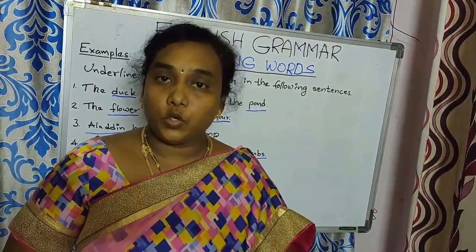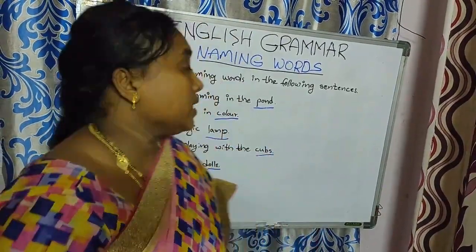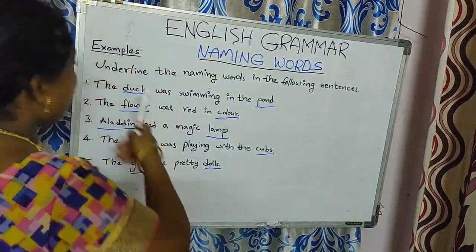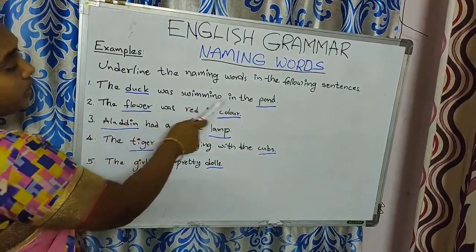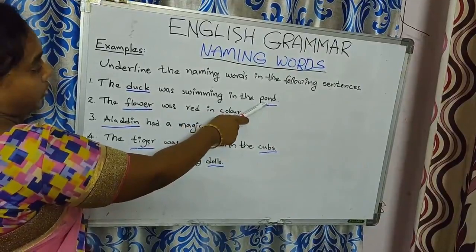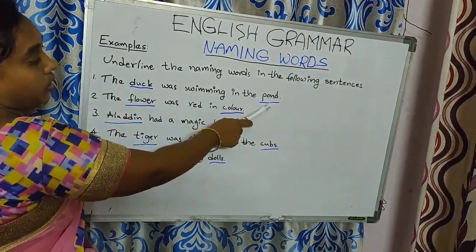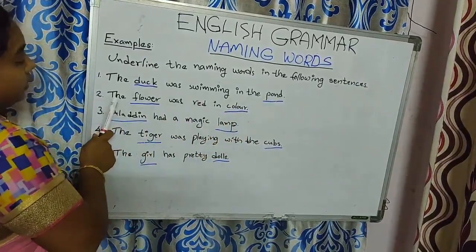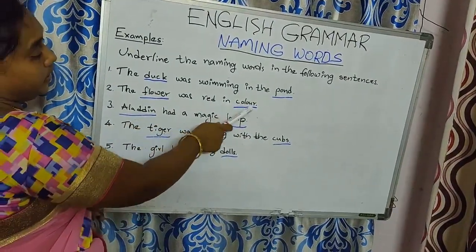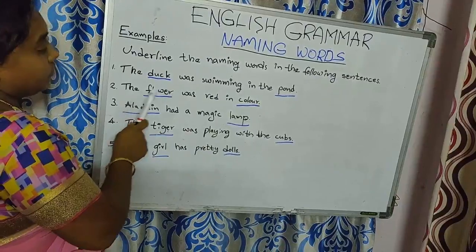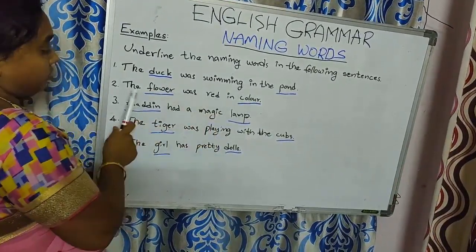So children, today I am going to show you some examples of naming words. Now let us see. Here are some examples. The duck was swimming in the pond. In this sentence, duck and pond are naming words. Second one: The flower was red in color. In this sentence, flower and color are naming words.